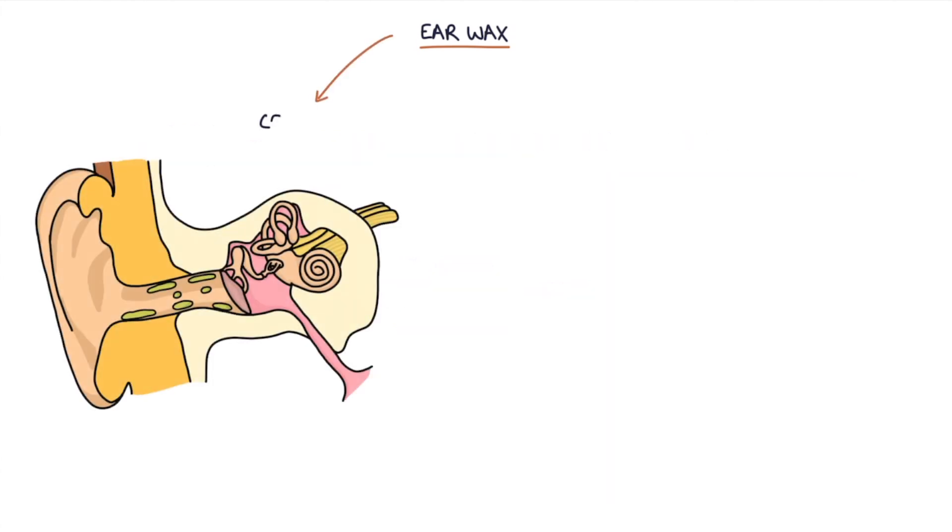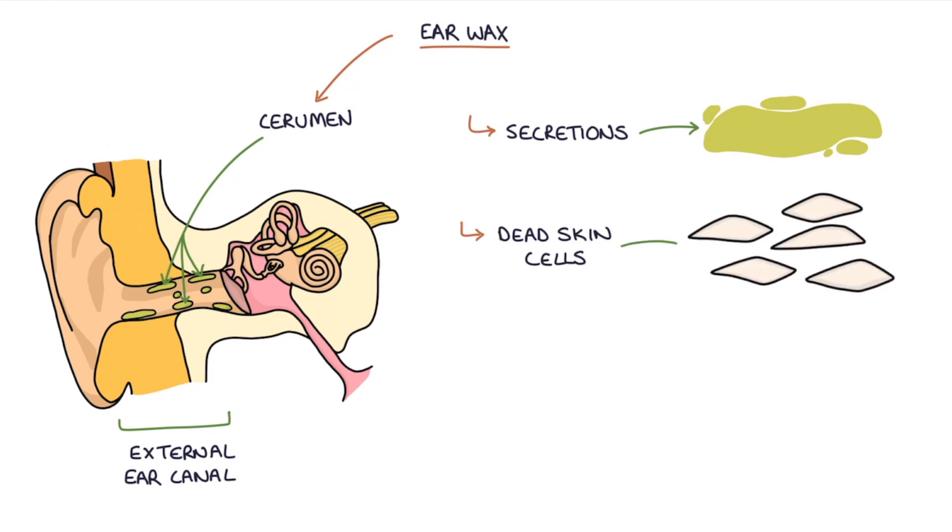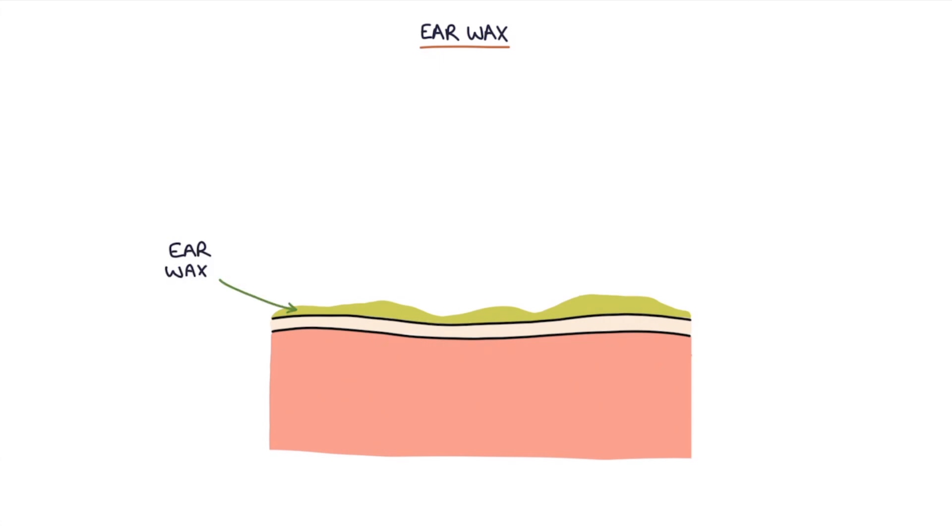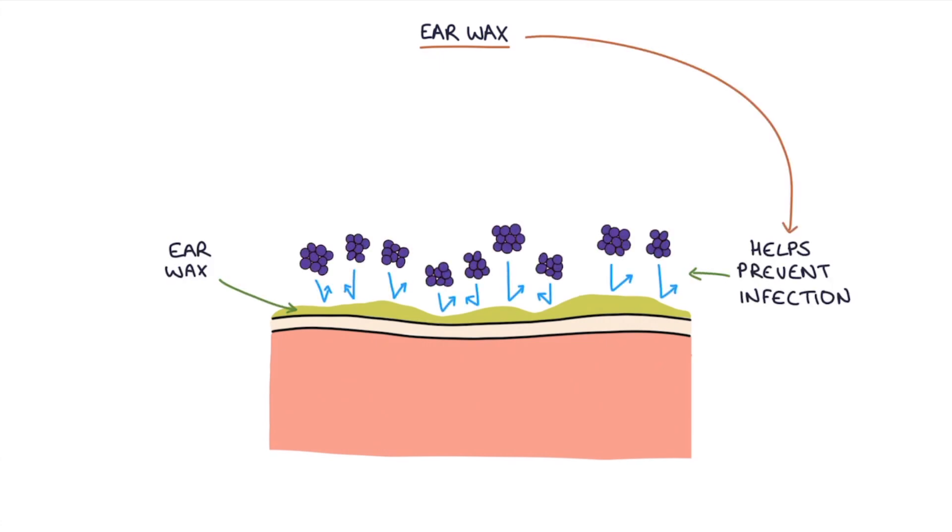Earwax is also called cerumen. It's normally produced in small amounts in the external ear. It's created from a combination of secretions, dead skin cells and any substances that enter the ear. Earwax has a protective effect helping to prevent infection in the ear canal. In most people, earwax does not cause any problems.